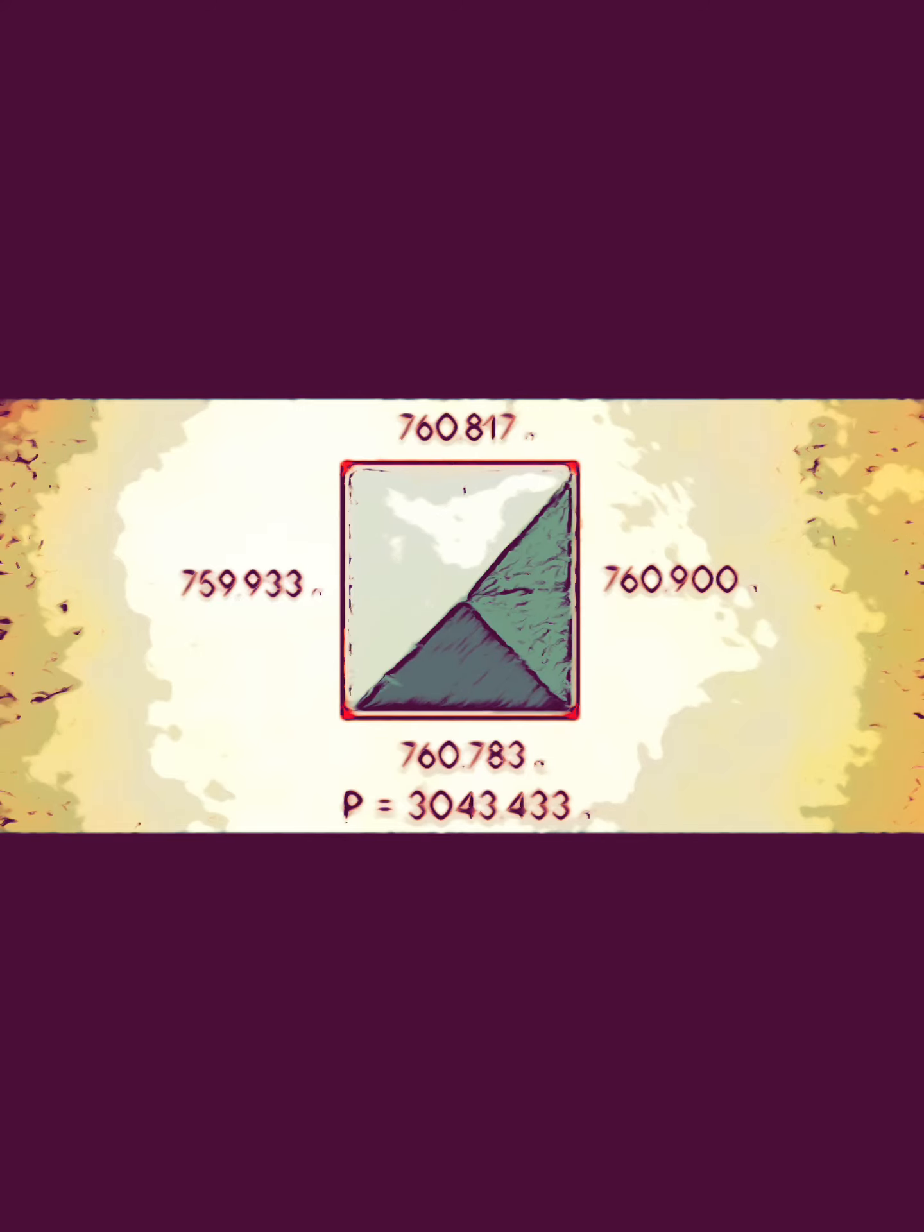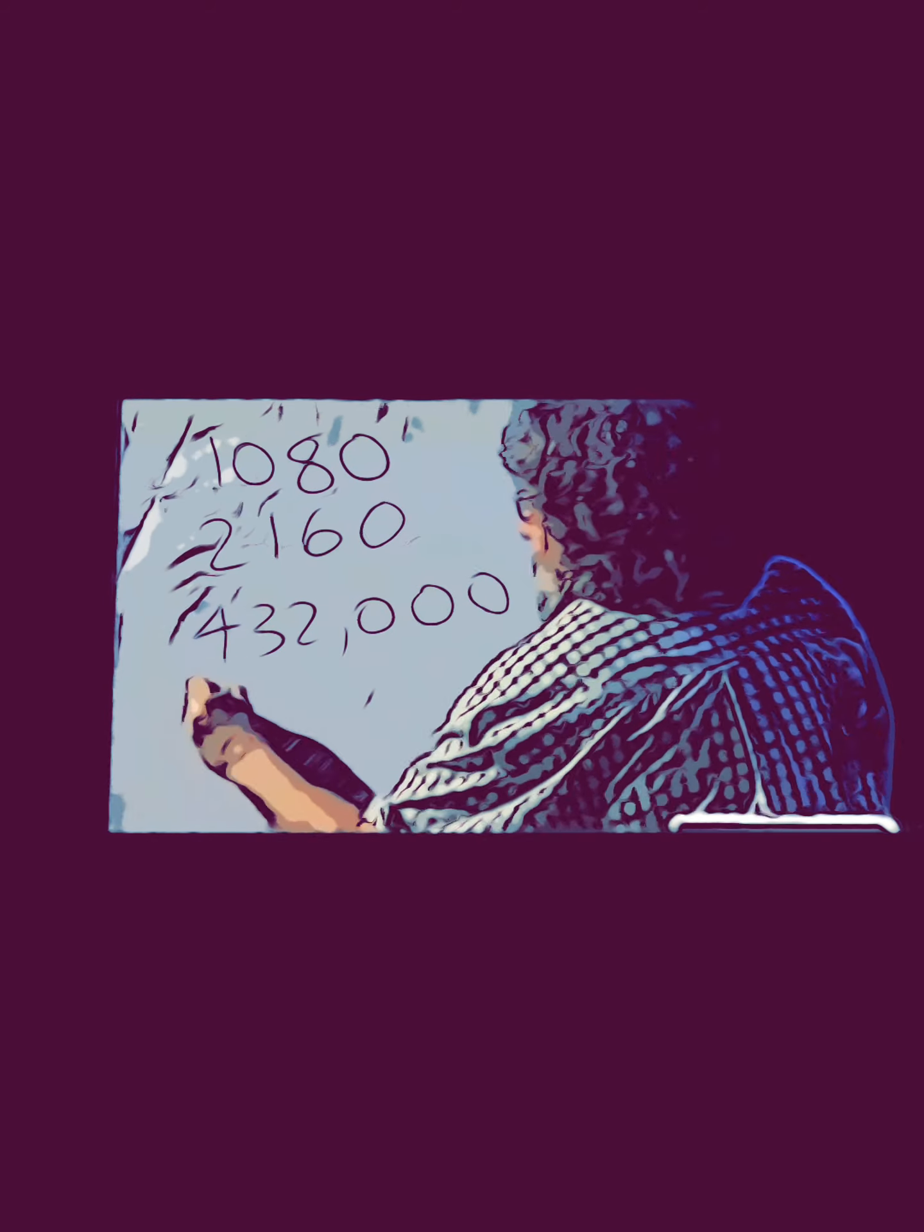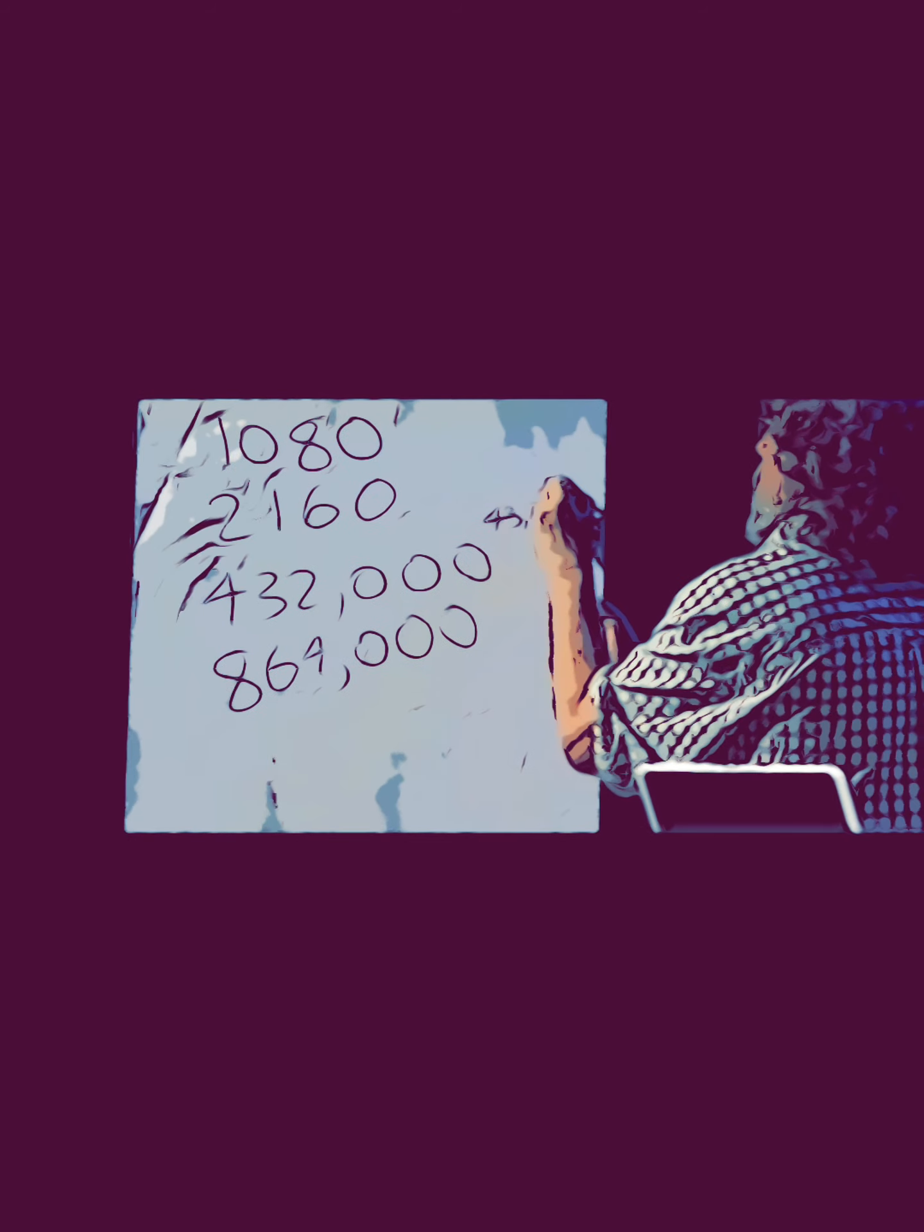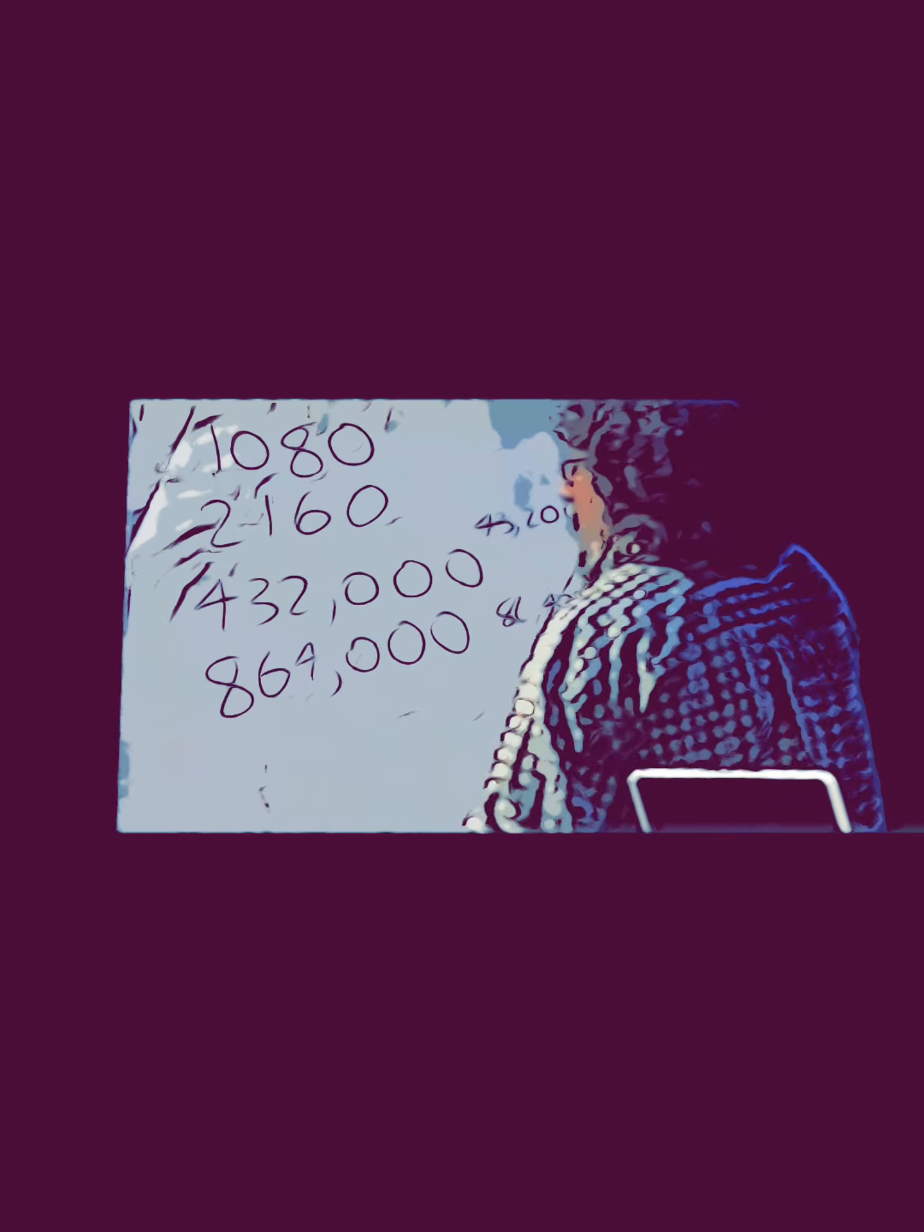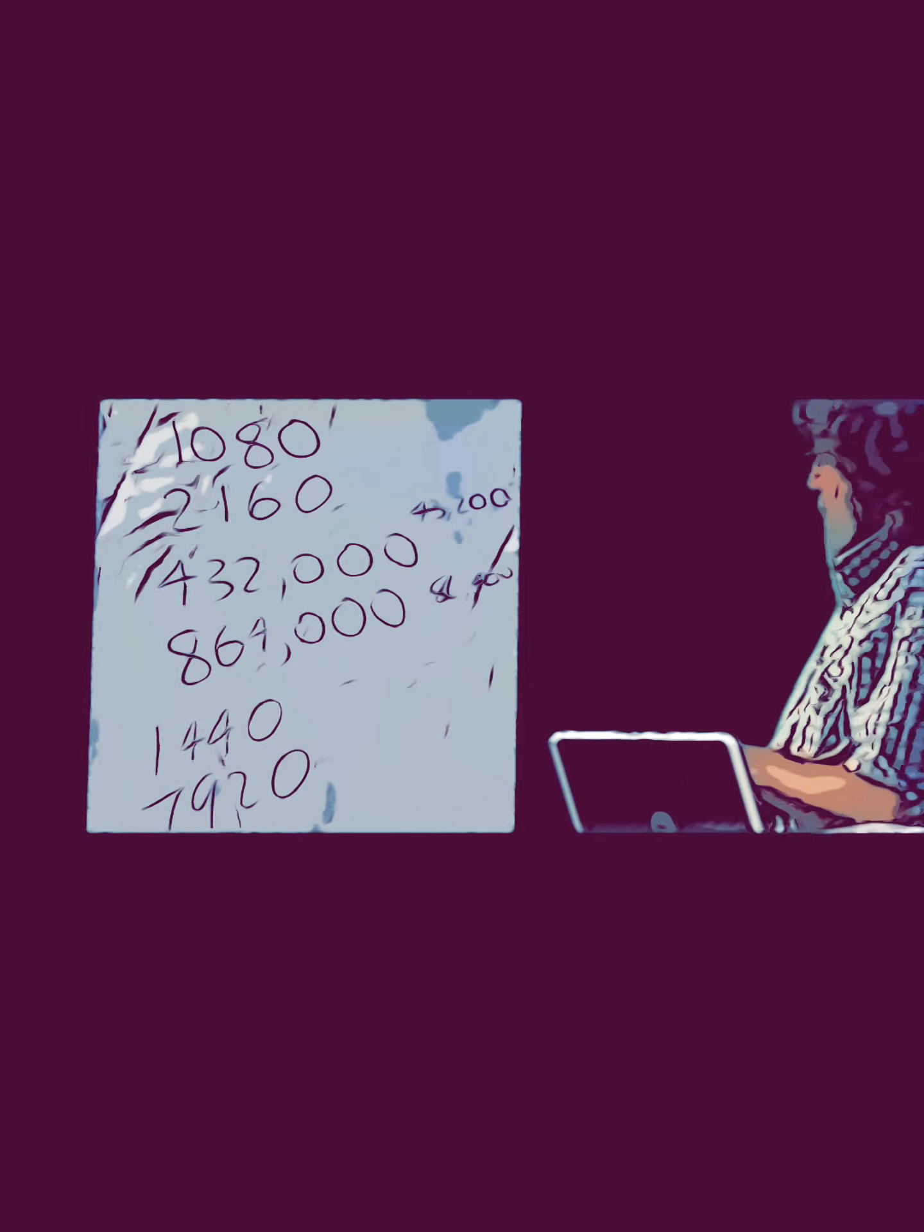Key numbers: radius of the moon, diameter of the moon, radius of the sun, diameter of the sun. Seconds in a day: 86,400. Half a day: 43,200. Other numbers: 1,440, 7,920 diameter of the Earth. I've listed these so they're in front of you for reference.